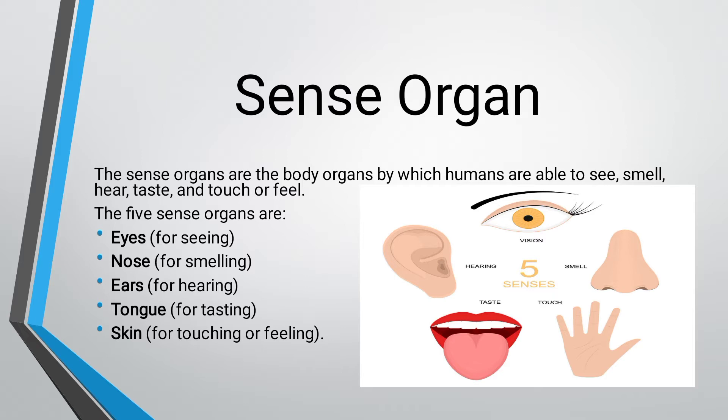The five sense organs are: eyes, nose, ears, tongue, and skin. Eyes are for seeing, nose is for smelling, ears are for hearing, tongue is for tasting, and skin is for touching or feeling.